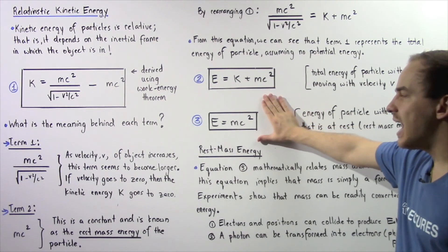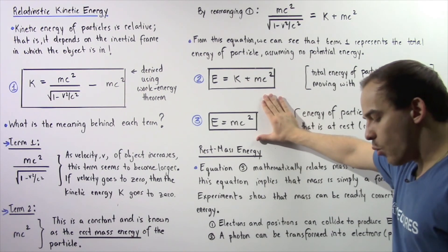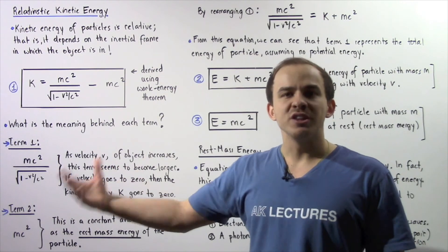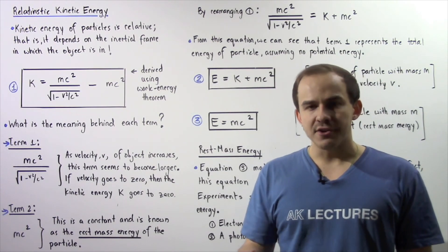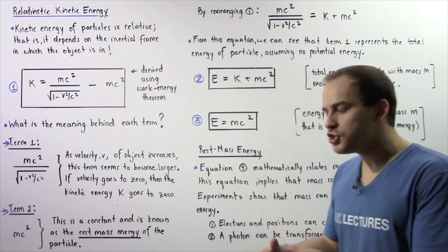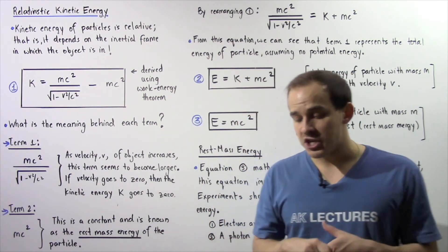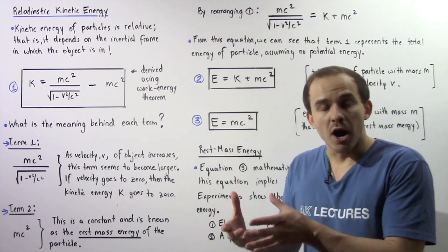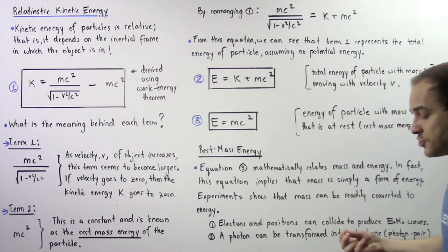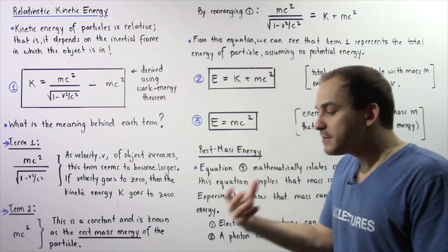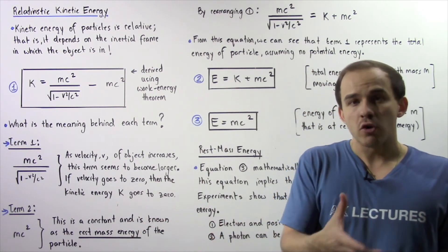What exactly is the meaning behind E equals mc squared? Why is rest mass energy so important? Basically, equation 3 mathematically relates energy to mass. Mass is one form of energy, in the same way that we have kinetic energy, gravitational potential energy, elastic potential energy, and electric potential energy — mass is itself a form of energy. Any object that has mass and is stationary has rest mass energy. Experiments show that mass can be readily transformed into energy, and energy can be readily transformed into mass.